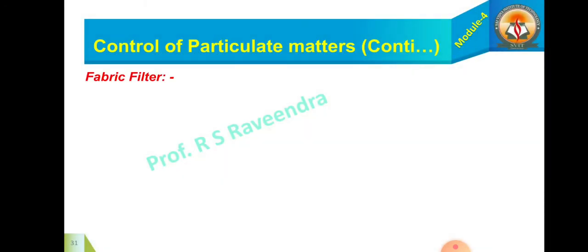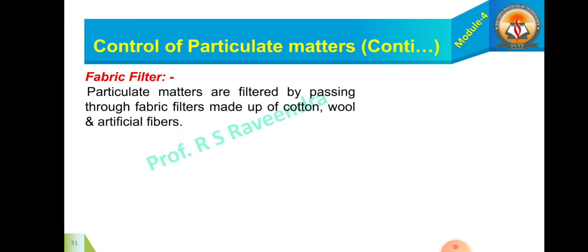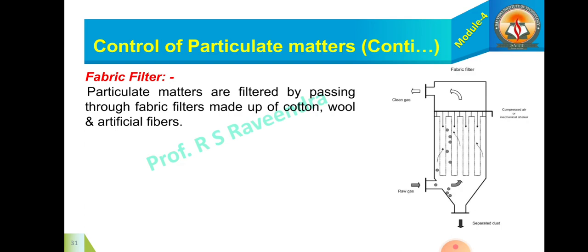And another controlling method is fabric filter. Particulate matters are filtered by passing through fabric filters made up of cotton, wool, and artificial fibers. This is the fabric filters. So this is about the various techniques involved in controlling of particulate matters. Thank you all.